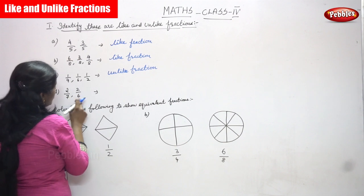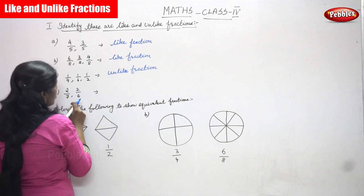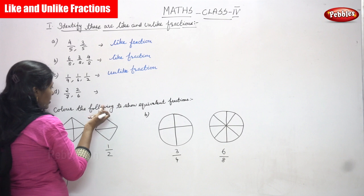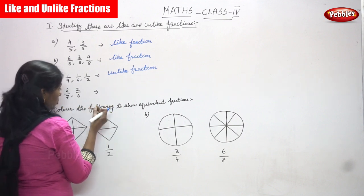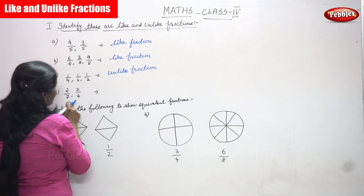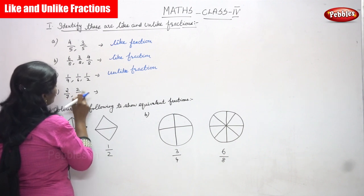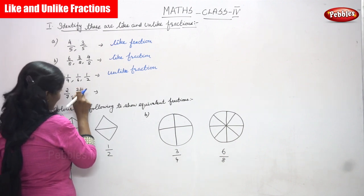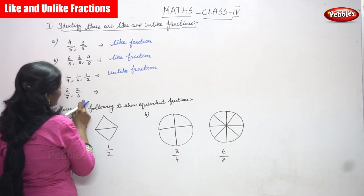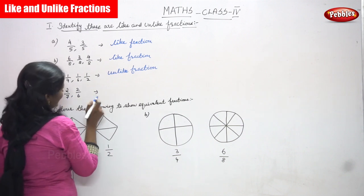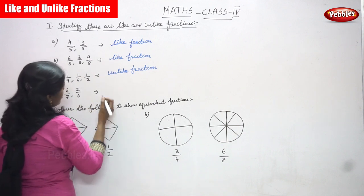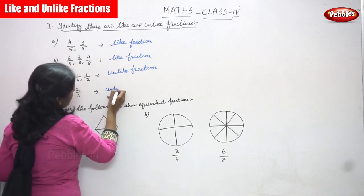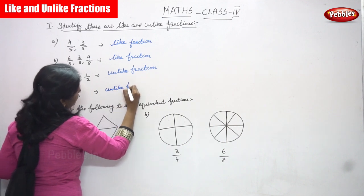Next: 2 by 7 and 2 by 6. The denominators are different — denominators are not same. Look at the numerators — all the numerators are similar but only the denominators are different. If the denominators are different it is an unlike fraction. So it is an unlike fraction.